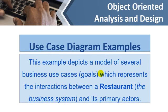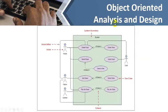Here is a use case diagram example of a restaurant. Forget about the 'extend' and 'include' for now — I will teach those in the next class. The waiter provides and serves food. The guest eats the food. The cashier receives payment, and the guest or waiter pays for the food. These are very simple use cases. We will discuss 'extend' and 'include' in the next class.